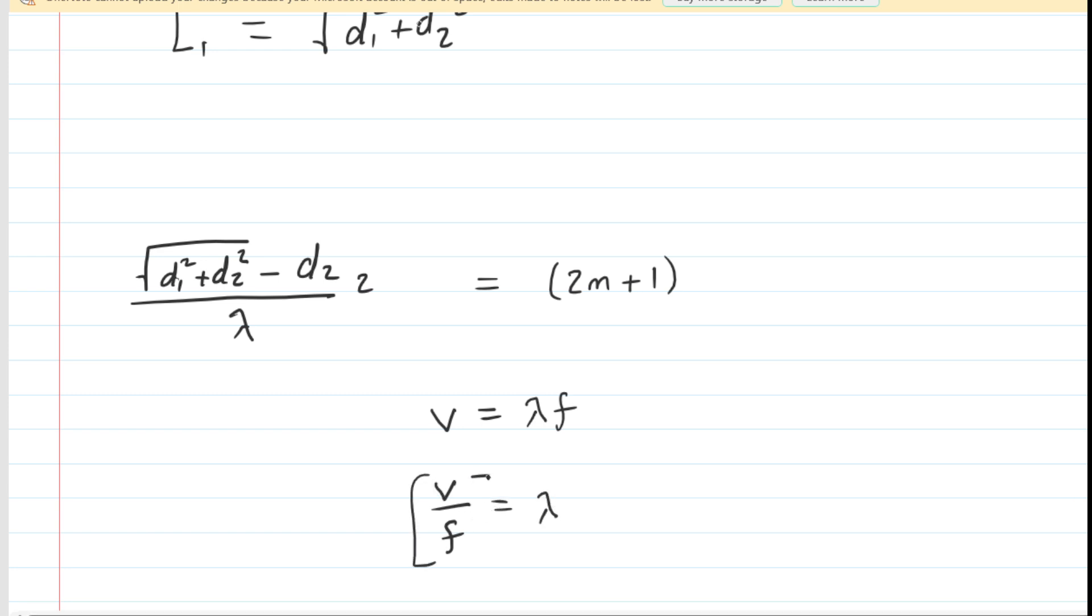So we're going to take this expression for wavelength, and we're going to plug it in to the equation that we've been developing. Now, what we're going to do is kind of simplify this a little bit. We're going to multiply the denominator by the frequency as well as the numerator. That way we can cancel the frequencies and kind of get rid of this complex fraction. So now we would just have v on the bottom. Let's multiply both sides of the equation by v so that we can cancel out the v on the left-hand side.